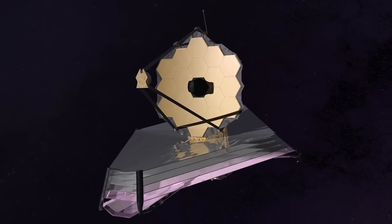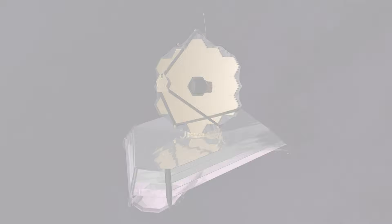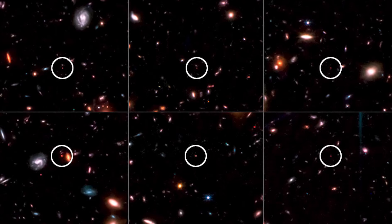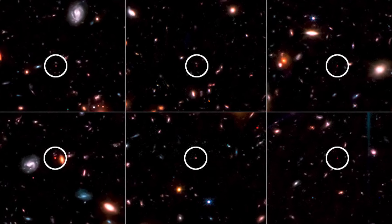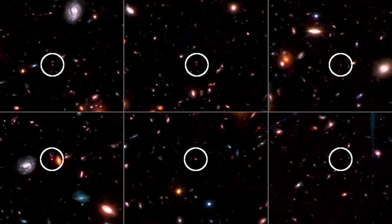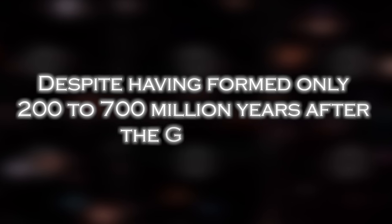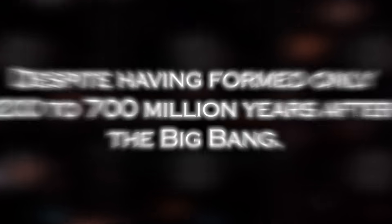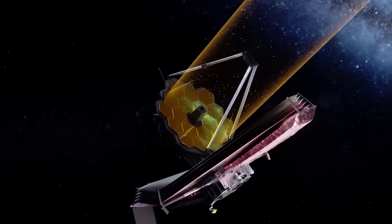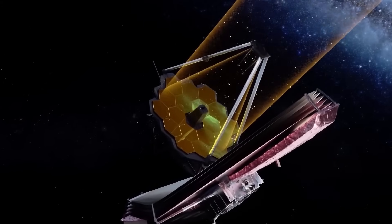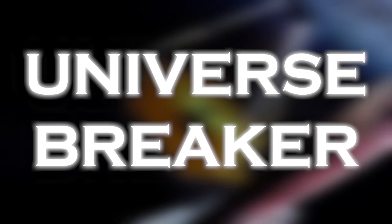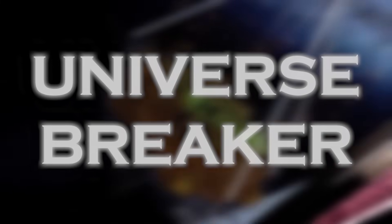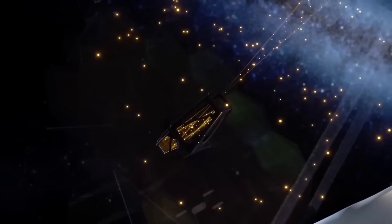The James Webb Space Telescope has revealed the discovery of six massive galaxies dating back to the earliest times of the universe. Each of these galaxies contains more stars than our own Milky Way, despite having formed only 200 to 700 million years after the Big Bang. The team of astronomers who have made the discovery have dubbed these exceptional galaxies 'universe breakers' because, if confirmed, they would revolutionize our entire understanding of the universe.